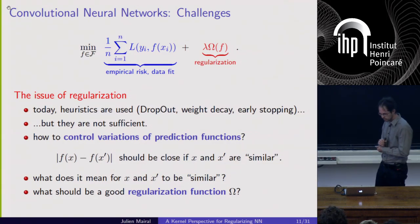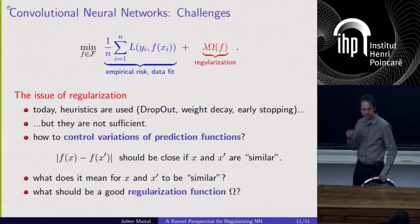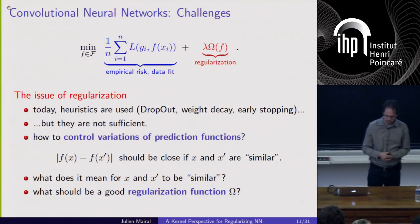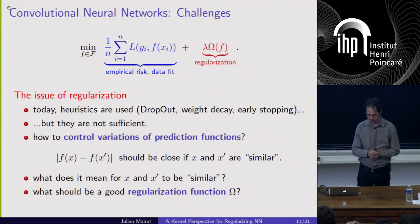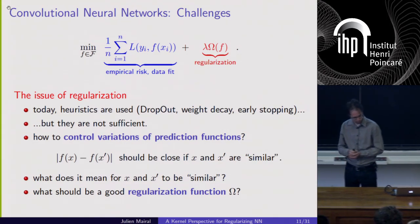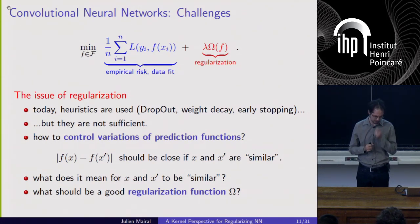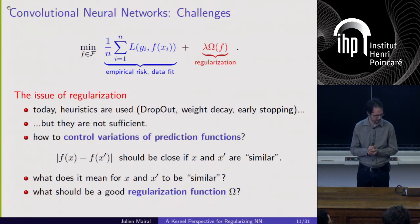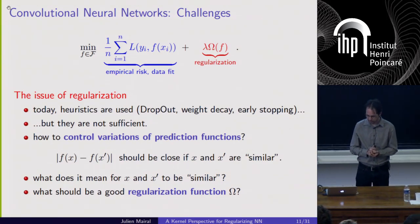The problem of generalization with few labeled samples and robustness to adversarial perturbations is related to the issue of regularization. Today when you train a deep network, we use lots of heuristics: dropout, which introduces stochastic perturbations during learning; weight decay, which penalizes the weights of parameters; and most importantly early stopping, where you stop optimizing by looking at the error on a validation set. All of this we know is not sufficient for the problems mentioned before.